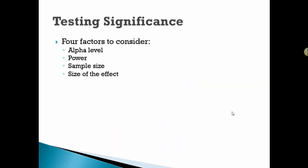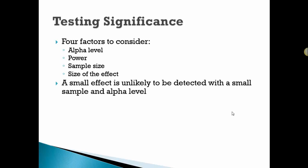Testing significance: there are four things to think about. The alpha level, the power, the sample size, and then also how large of an effect do you want to detect.